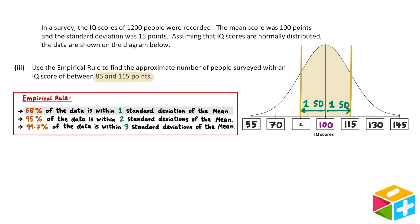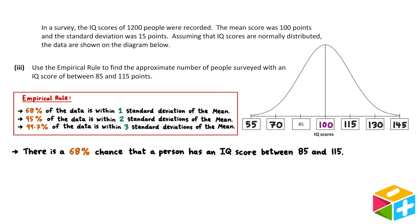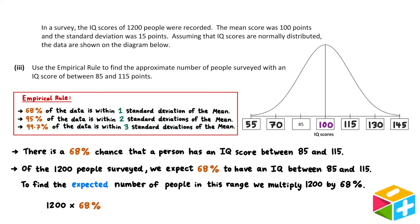Using our empirical rule, we know that there's a 68% chance that a person falls in this range. So each individual person we surveyed has a 68% chance to have an IQ score between 85 and 115. We surveyed 1,200 people. And of these people surveyed, we'd expect 68% of them to have an IQ score between 85 and 115. To find the expected number of people, all we have to do is multiply 1,200 by 68%.